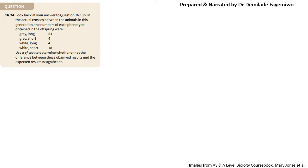Now let's look at an example from the textbook. If you did not watch the previous video please do so, because this is a continuation of a question we've already solved there. The question says: look back to your answer from that question — in the actual cross between the animals, the numbers of each phenotype obtained in the offspring were as follows — and asks us to use a test to determine whether the difference between the observed and expected results is significant.